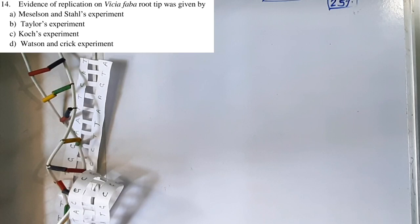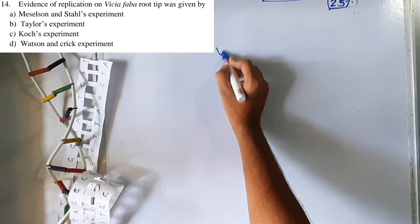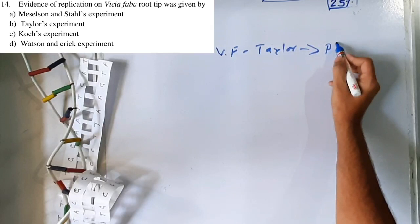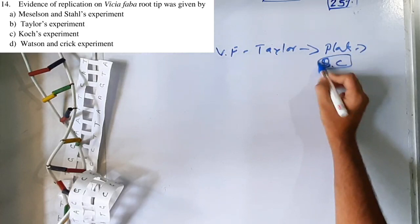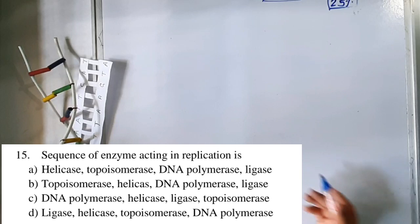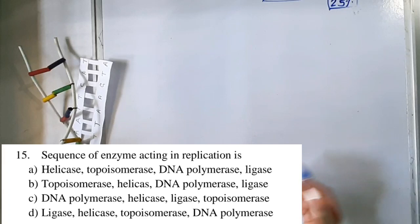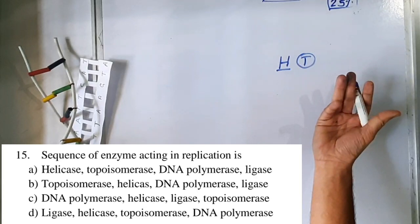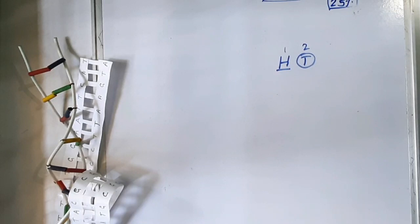Question 14: Evidence of semi-conservative replication on Vicia faba root tip was given by Taylor. Question 15: The correct sequence of enzymes acting in replication is helicase first, then topoisomerase, then DNA polymerase, then ligase. H comes before T alphabetically — no confusion. Option A is correct.